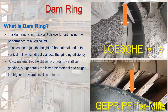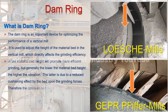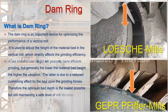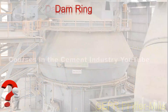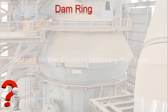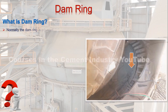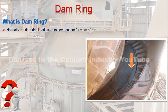Generally, the lower the material bed height, the higher the vibration. This is due to a reduced cushioning effect by the bed upon the grinding forces. Therefore, the optimum bed depth is the lowest possible while still maintaining a safe level of mill vibration.